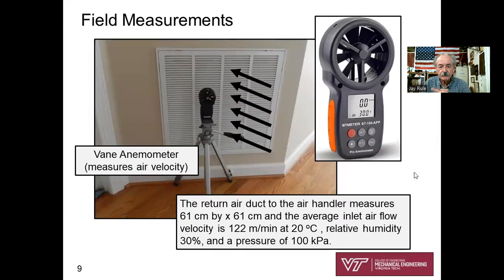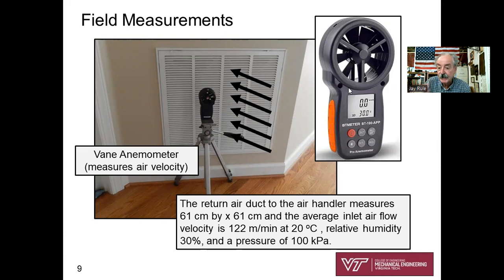You may ask how those numbers were obtained — here's a photograph showing how. I set up a vane anemometer at the return air inlet duct, which spins based on the velocity of air passing through it. I measured the inlet duct dimensions and used the anemometer to get 122 meters per minute.